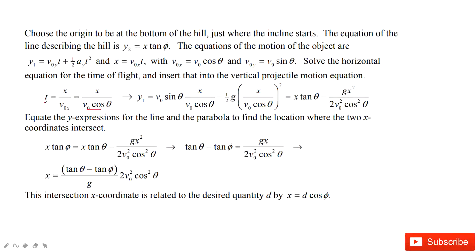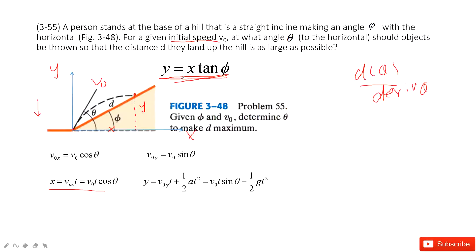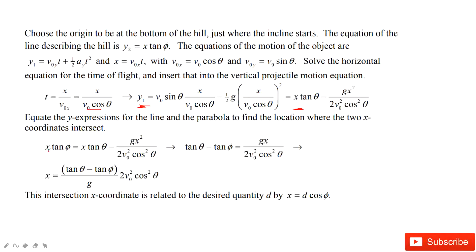We substitute t into the y equation to get the function y with x for the projectile motion. Since this x and y must also satisfy the hill equation y equals x tangent phi, we put that in: x tangent phi equals this function, and subtract the terms accordingly.